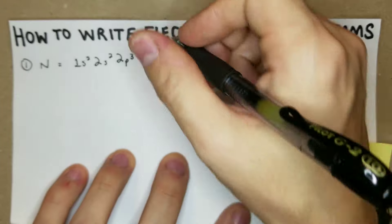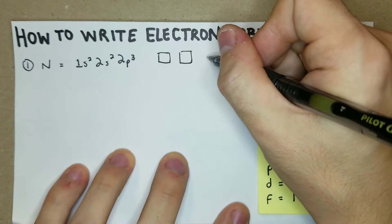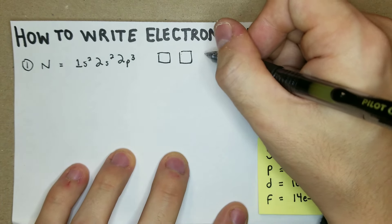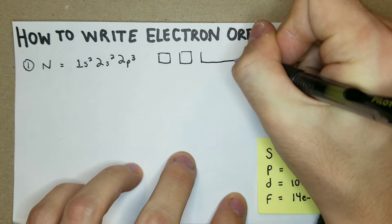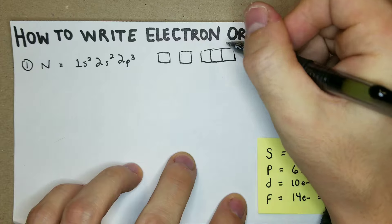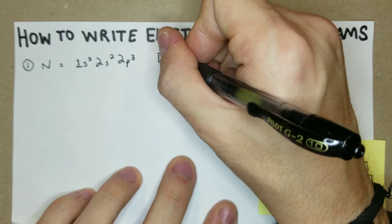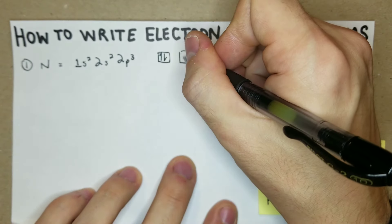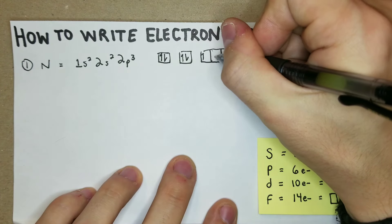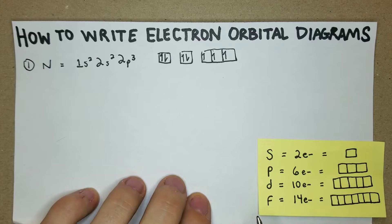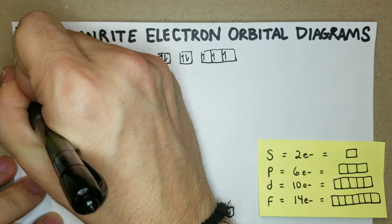Now we'll do this with the boxes. We have the 1s, the 2s, and the 2p. In the 1s we have up arrow, down arrow — two electrons. In the 2s we have up arrow, down arrow. And then in the 2p we have up arrow, up arrow, up arrow. That's the box diagram, or picture diagram depending on what your class calls it.